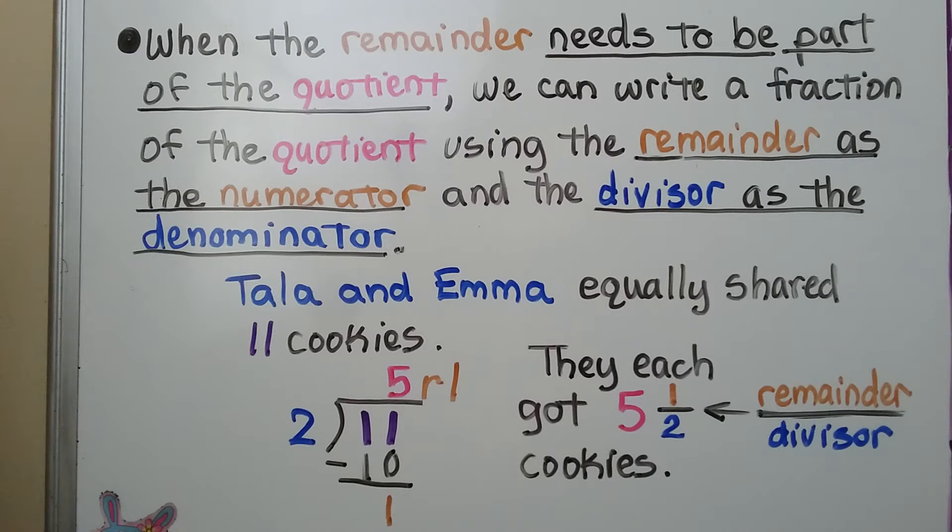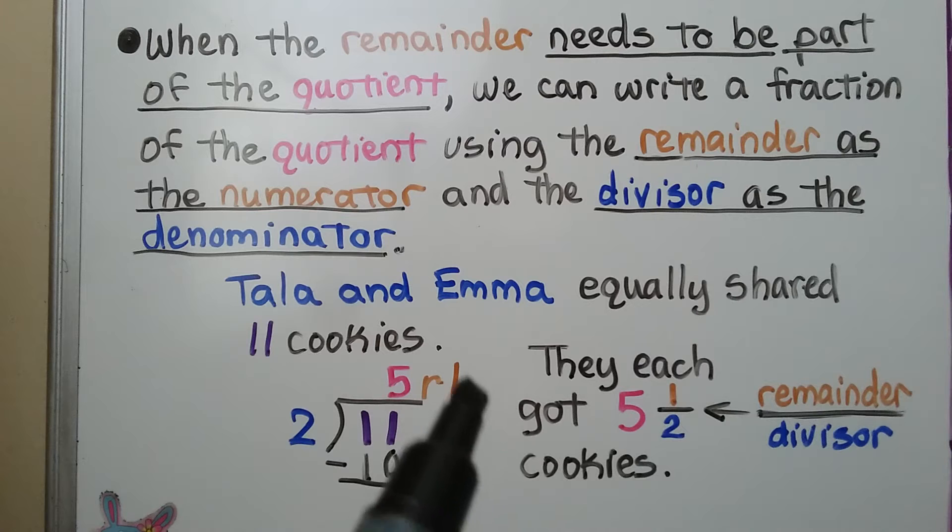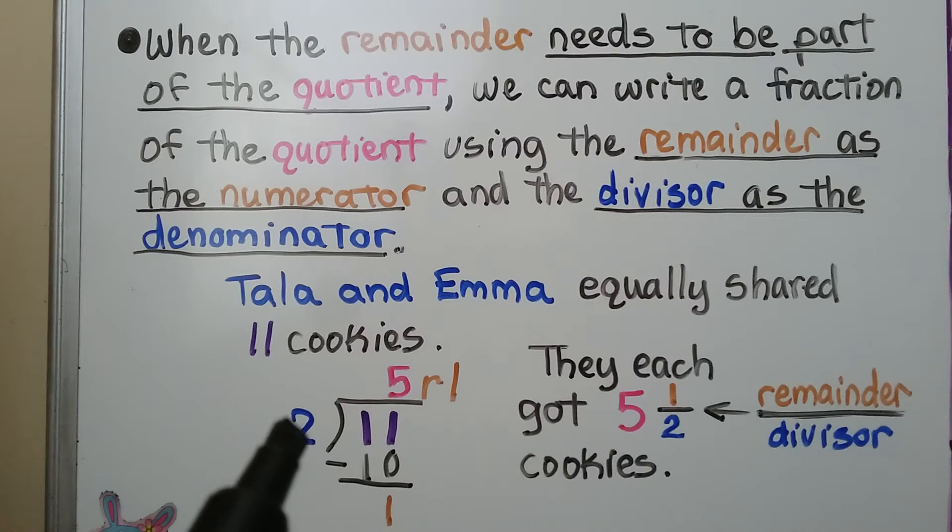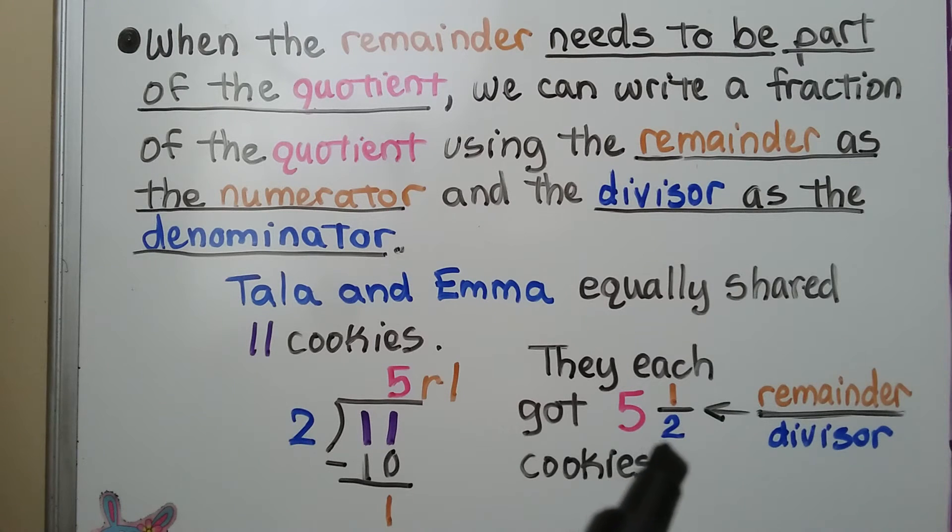We can say they each got 5 and a half cookies, because the 1 is going to be the numerator, and the divisor 2 is going to be the denominator. We have 1 half. They each got 5 and a half cookies. They split 1 cookie in half, and they each got 5 and that extra half.